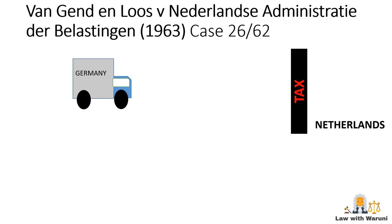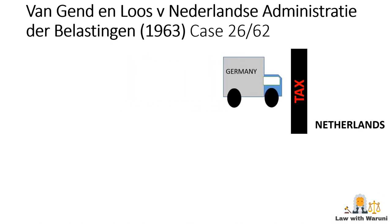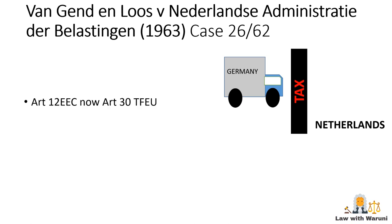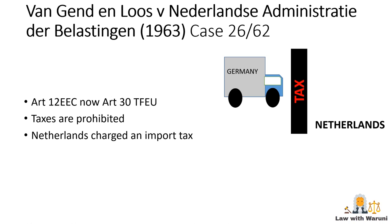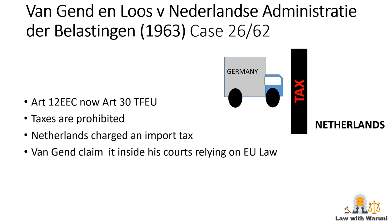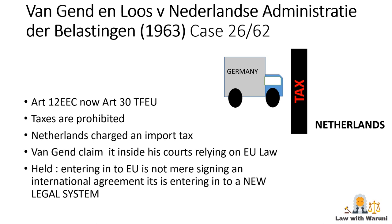We will learn the facts of the Van Gend en Loos case in brief. Van Gend en Loos imported some urea formaldehyde from Germany to the Netherlands, and the Dutch customs authorities imposed an import tax on Van Gend en Loos. Van Gend en Loos argued that a tax cannot be imposed on him as per Article 12 EEC, which is now Article 30 TFEU. As per Article 30 TFEU, member states are prohibited from imposing import or export custom duties within the customs union.